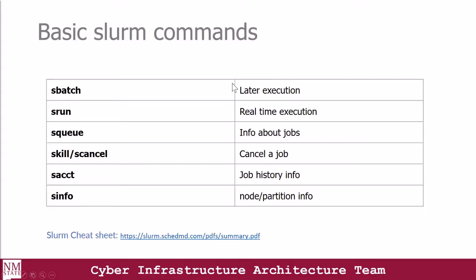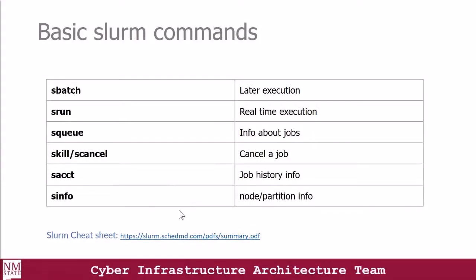The sbatch command allows you to submit a job for later execution. The srun command allows you to run your job interactively. The sq command allows you to view information about jobs in the queue, and the scancel command helps you to cancel your job. Finally, the sinfo command allows you to view information about the nodes and partitions within a high-performance computing cluster.